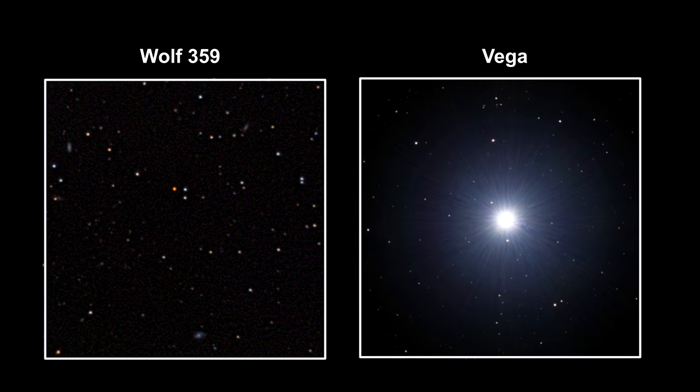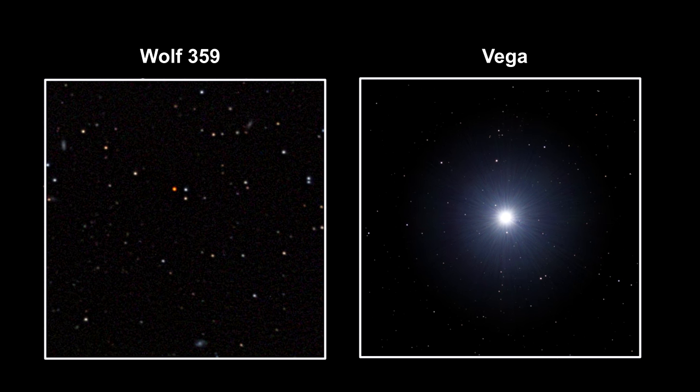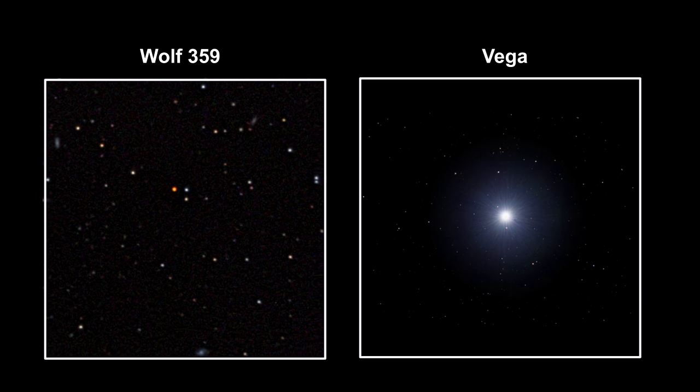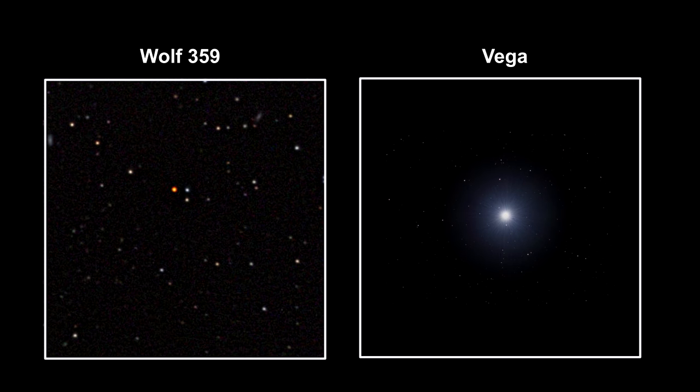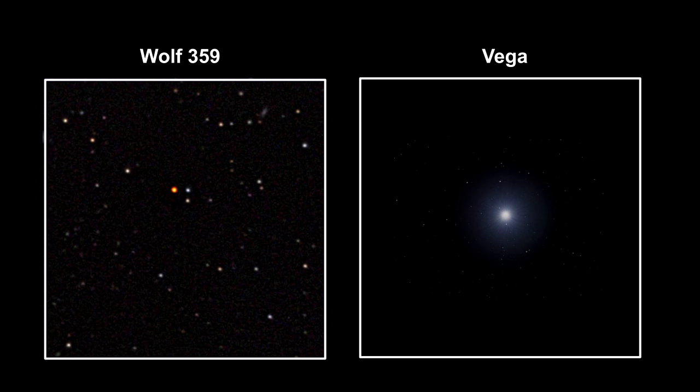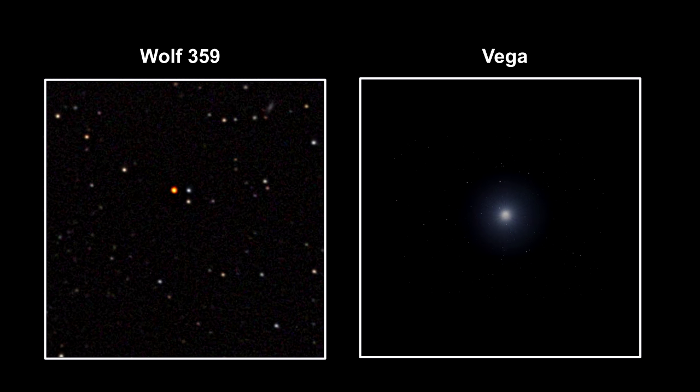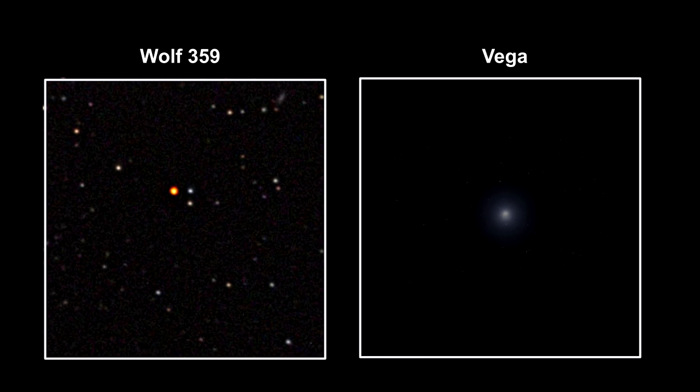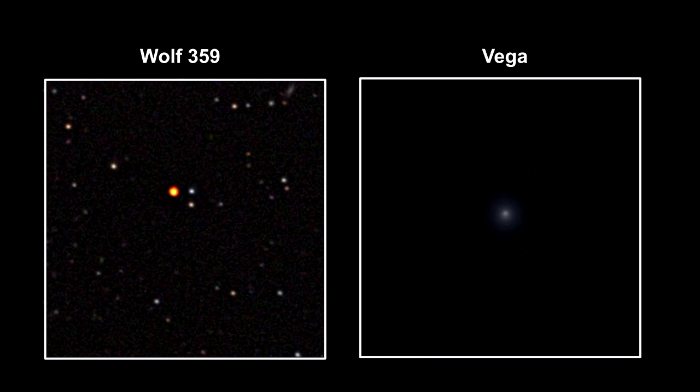Stars have a wide range of apparent brightness, as measured here on Earth. The variation in apparent star brightness is caused by two things: one, stars have different intrinsic luminosity, and two, stars are located at different distances from us.